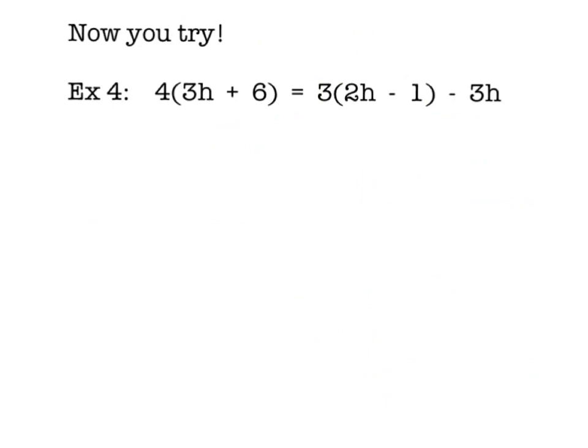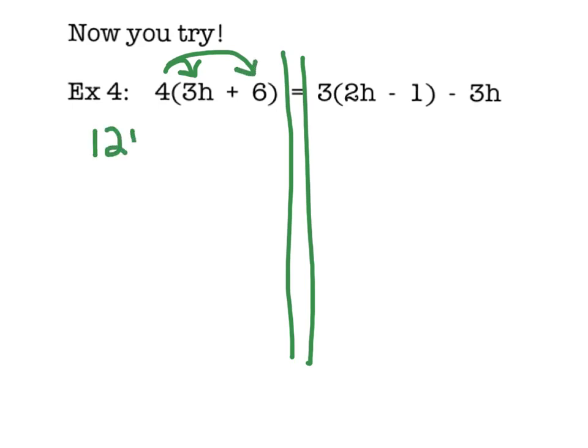Alright, guys, we have one more example, and after that last one, this one should be a breeze. Alright, put in some railroad tracks, and let's start distributing. I'm going to distribute here. 4 times 3h is 12h, plus 4 times 6, which is 24. On the right-hand side, I'm going to distribute my 3 into the parentheses. 3 times 2h is 6h, minus 3 times 1 is 3. And then after the parentheses, I still have minus 3h.